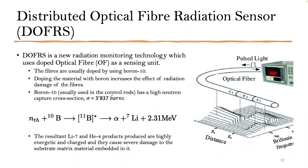The other mode is the distributed mode, where the fiber itself is a sensor. This is the distributed optical fiber radiation sensor — a new radiation monitoring technology which uses a doped optical fiber as a sensing unit. The fibers are usually doped using boron-10. Doping the material with boron increases the effect of radiation damage, and you use that damage to sense the parameter of interest.